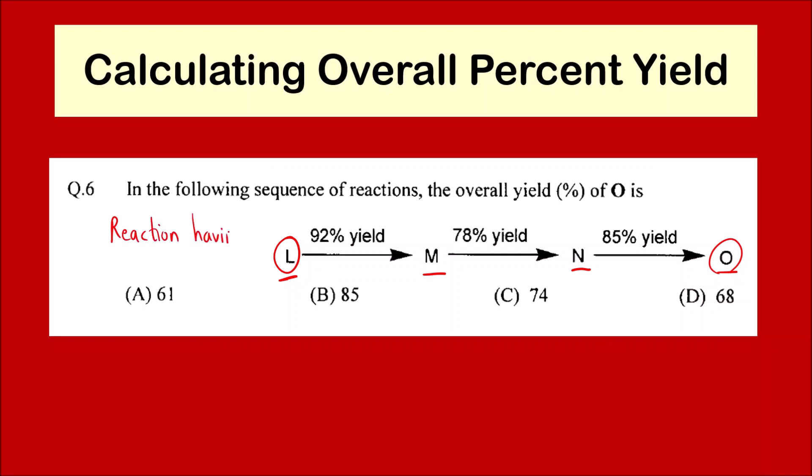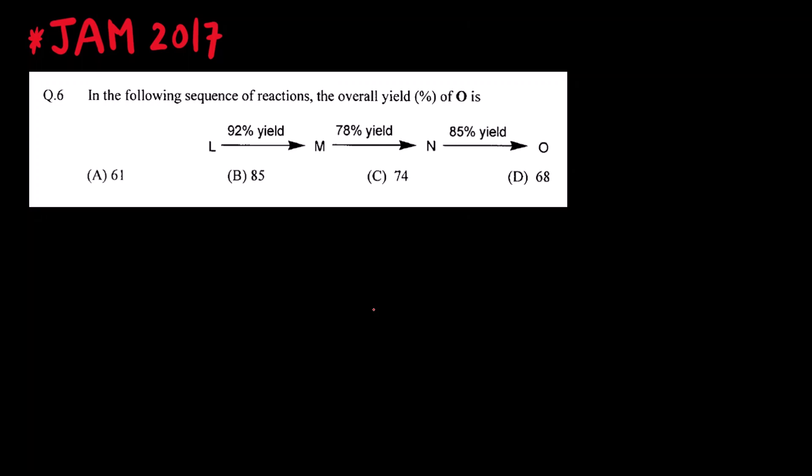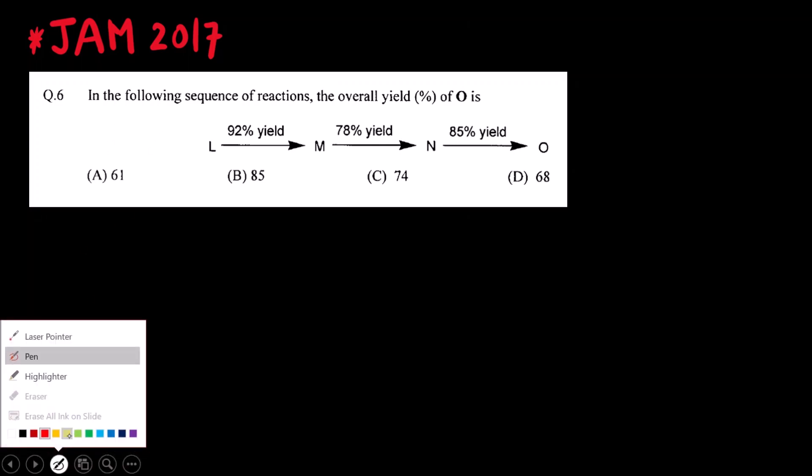A reaction having multiple steps, and what I have to find out is the overall percentage yield of this reaction. So this was a question that was asked in JAM 2017 paper.